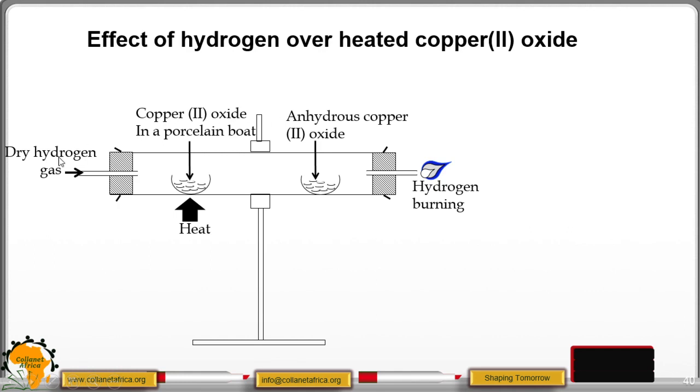When hydrogen gas is passed through copper oxide, we know that hydrogen is above copper in the reactivity series. That means hydrogen normally displaces copper from its compound.